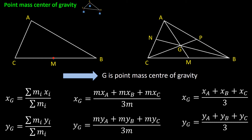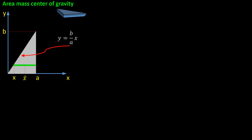Now we continue with the area mass center of gravity — the second case. First I find the area mass center of gravity for a right triangle, and then I expand it to a general triangle. Here is my right triangle: one side is a, one side is b. I put one corner at the origin. We can easily show that the equation of this line is y = (b/a)x.